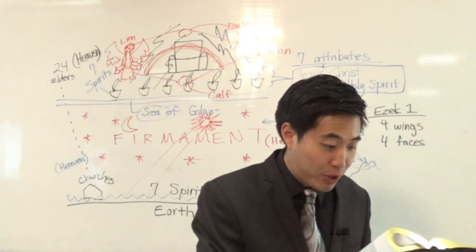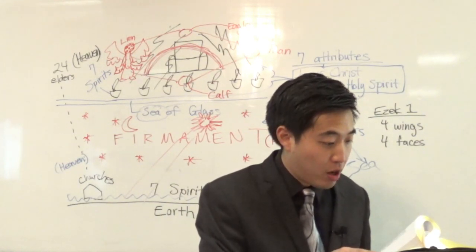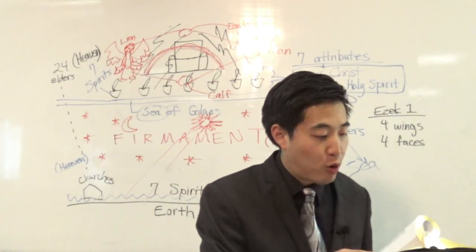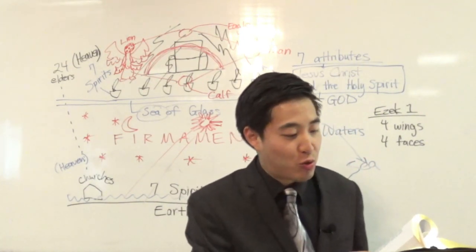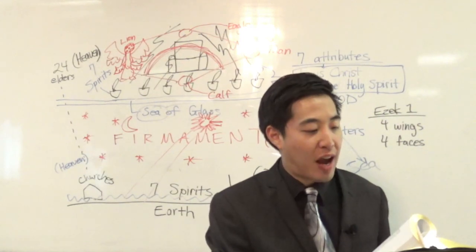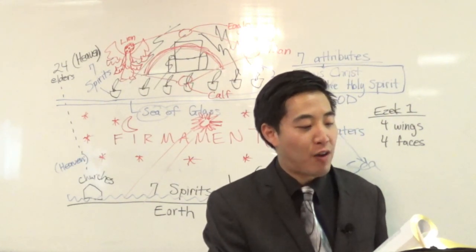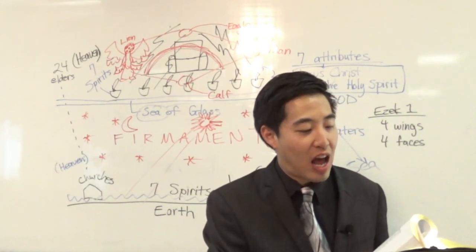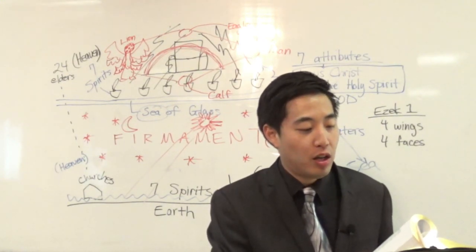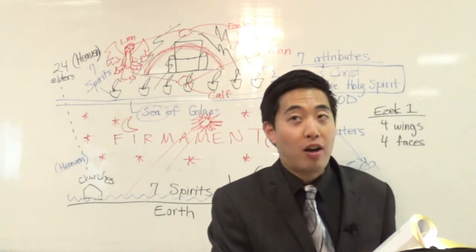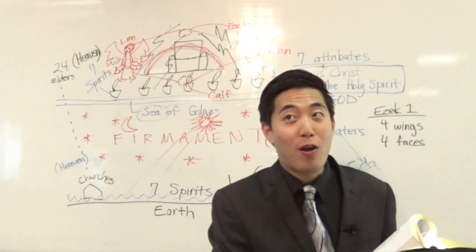Ezekiel chapter 10. Notice what the Bible says concerning about these four cherubims again, verse 14. Everyone had four faces, the same cherubims. The first face was the face of an ox and the face, second face, was the face of a man. The third, the face of a lion and the fourth, the face of an eagle. Did I read something wrong here? It said what? Cherub. Not ox. It said cherub.